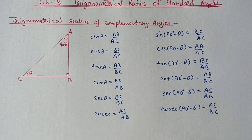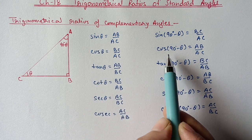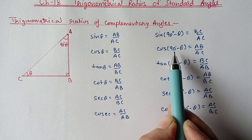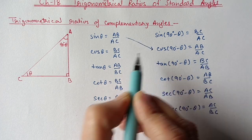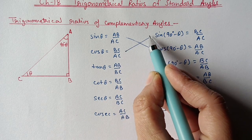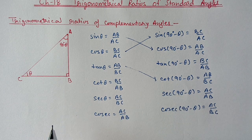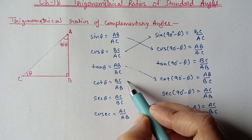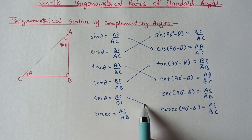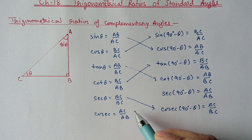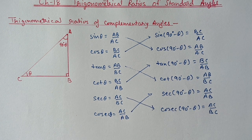Now we can check the relation between them. You can see that sin θ = cos(90 − θ) since both equal AB/AC. Similarly: tan θ = cot(90 − θ); cot θ = tan(90 − θ); sec θ = cosec(90 − θ); and cos θ = sec(90 − θ).